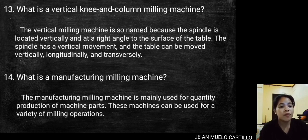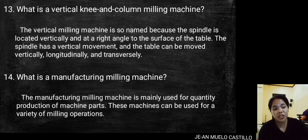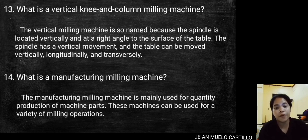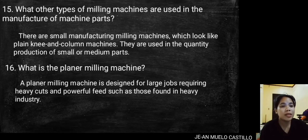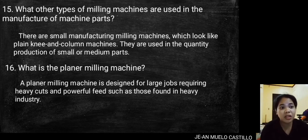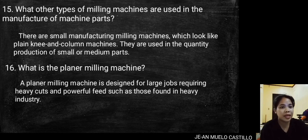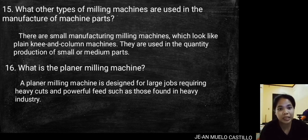What is the manufacturing milling machine? The manufacturing milling machine is mainly used for quantity production of machine parts. These machines can be used for a variety of milling operations. There are also small manufacturing milling machines which look like plain knee and column machines and are used in the quantity production of small or medium parts.